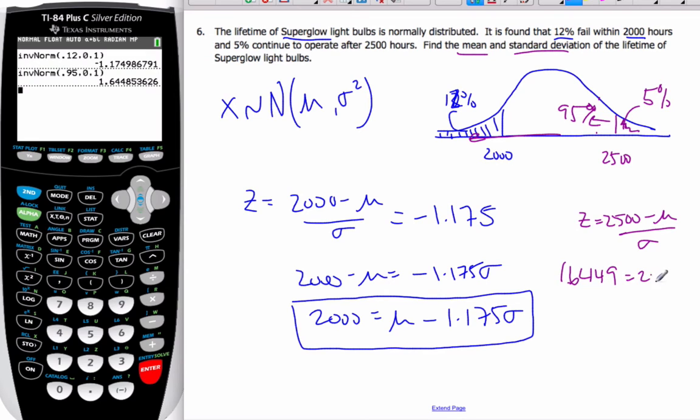It's equal to 2500 minus μ over σ. Rearranging this, I can say that 2500 is equal to μ plus 1.6449σ.